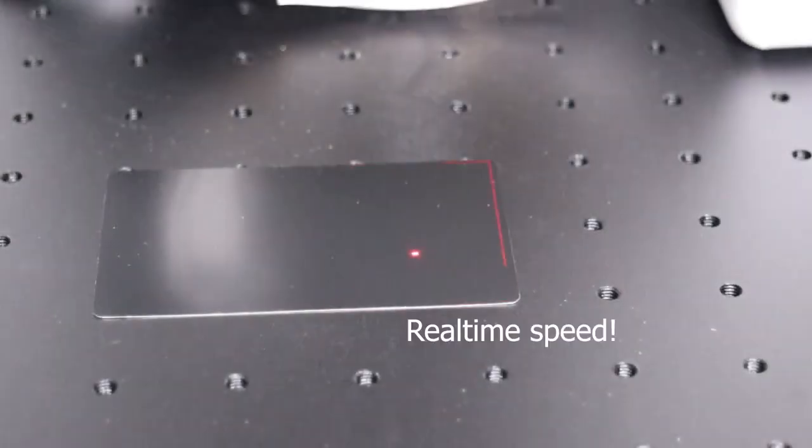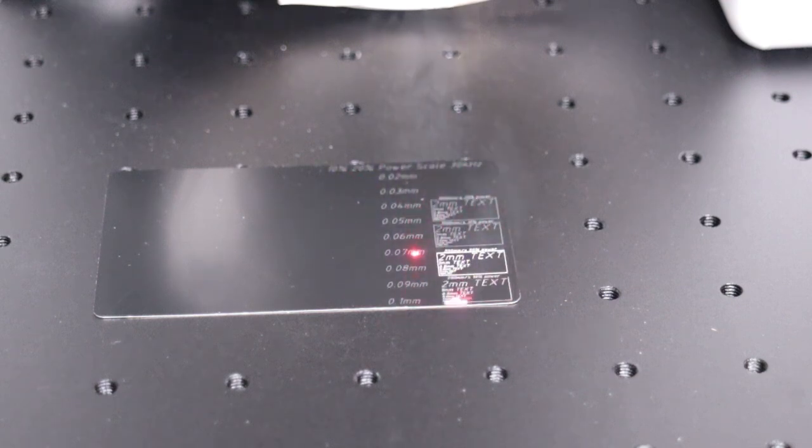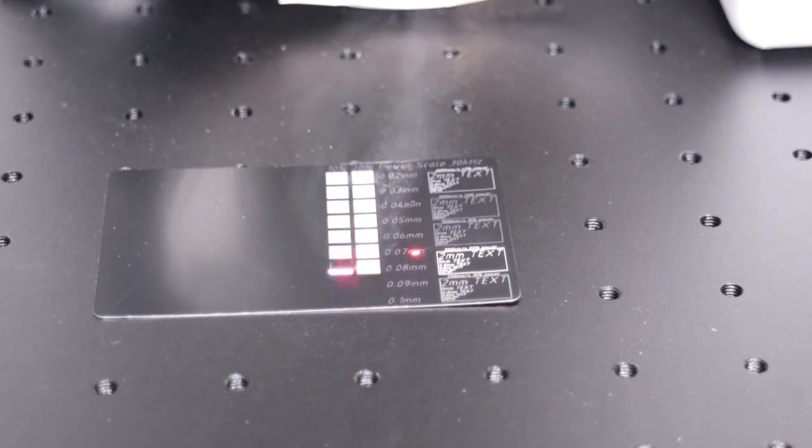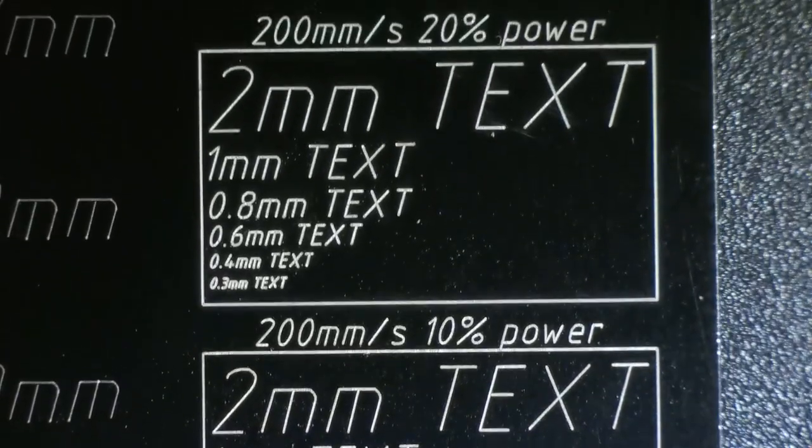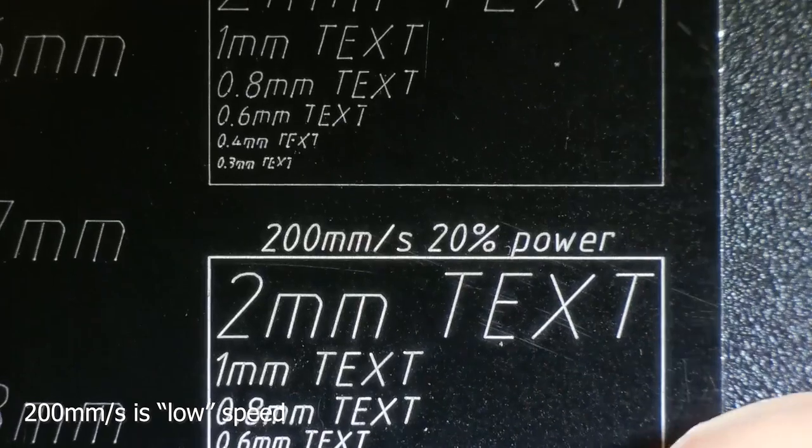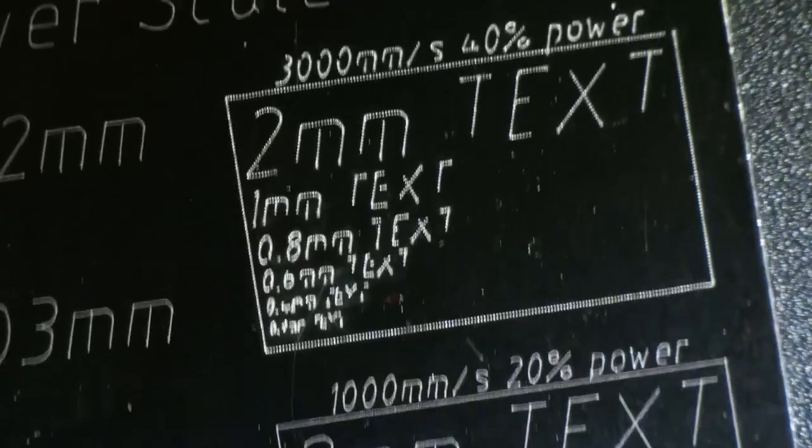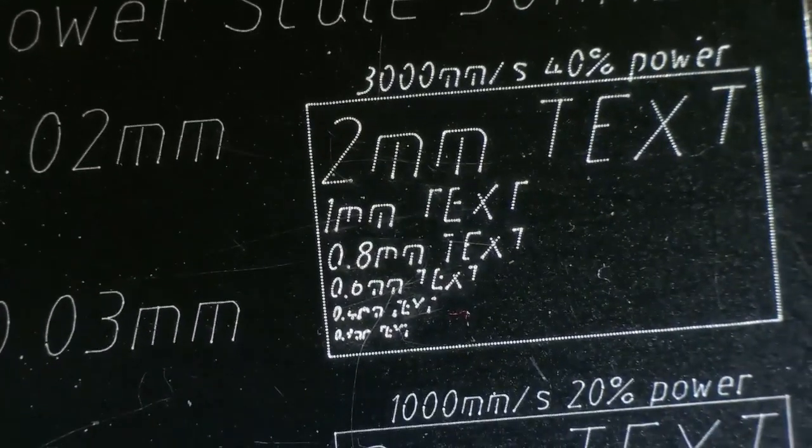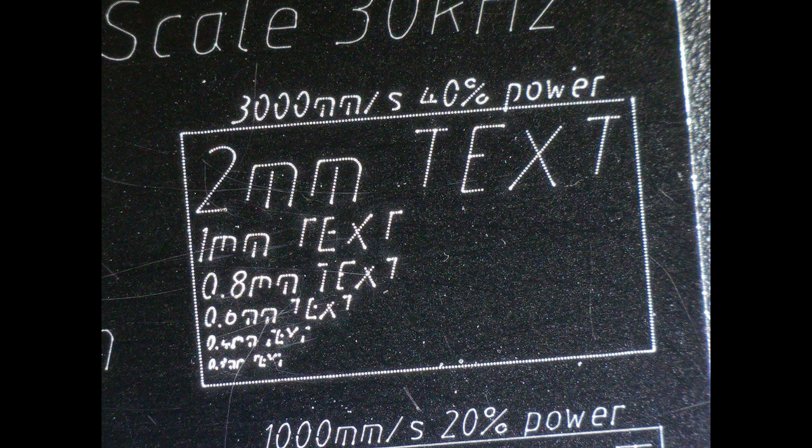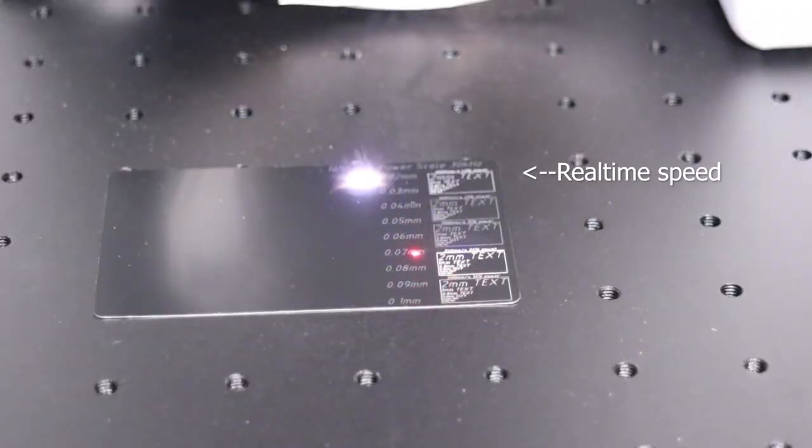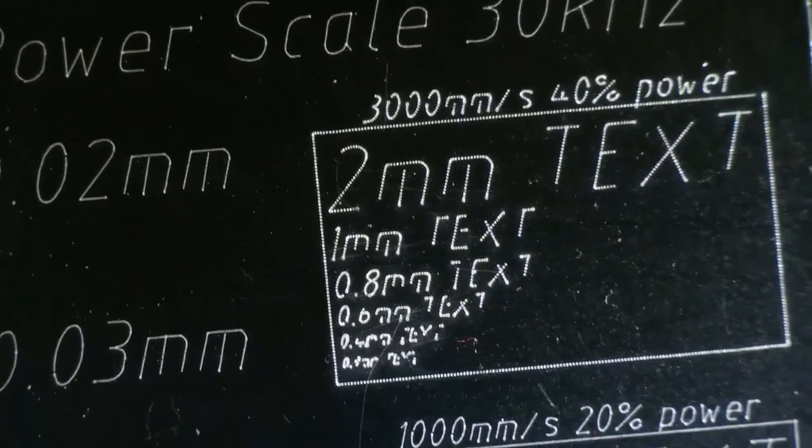This machine can engrave at very high speed. For the first test, I have engraved some small text at high speeds and a simple interval test to see how it performs at high detail engravings. At lower speeds, the engravings were perfect, but at 1000 mm per second, the quality started to suffer a bit. And at 3000 mm per second, the smallest text was not readable anymore. Here we can also see the individual pulses that laser is producing, as 30 kHz is a very low frequency for such high speed. Using a higher frequency setting would solve this issue.